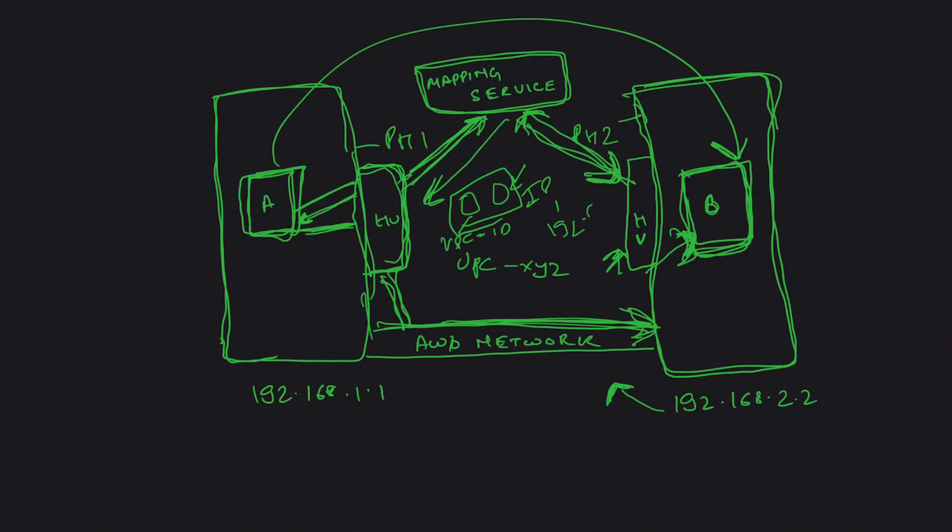AWS actually has optimized this process. So now there's, I don't think there's a central mapping service running. Instead there are mapping caches which are running on each physical host. So every physical host has basically a copy of mapping service running on their physical host.